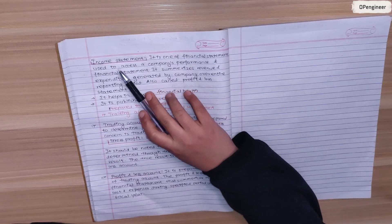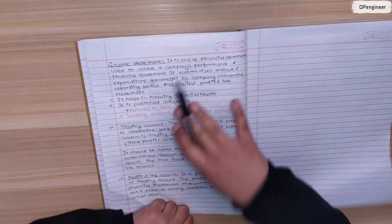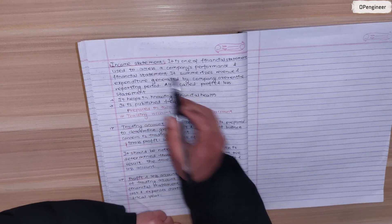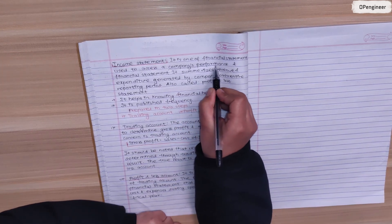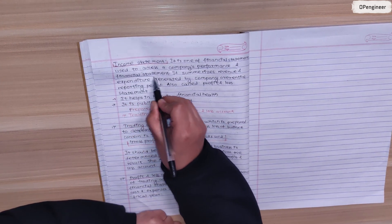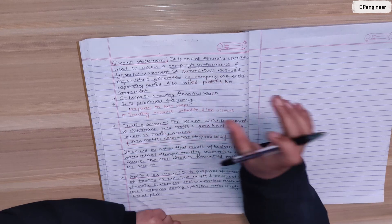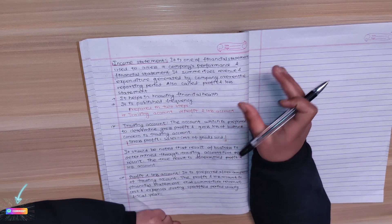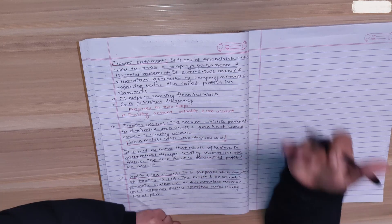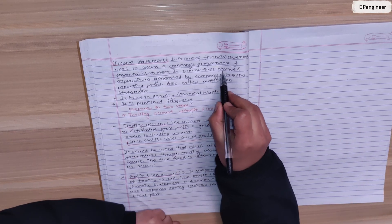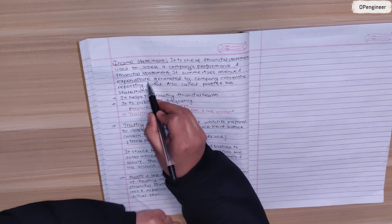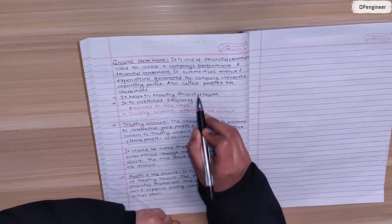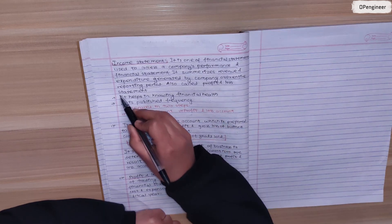Next topic is the income statement. It is one of the financial statements used to assess a company's performance. It summarizes revenue and expenditure generated by the company over the entire reporting period, also called the profit and loss statement.